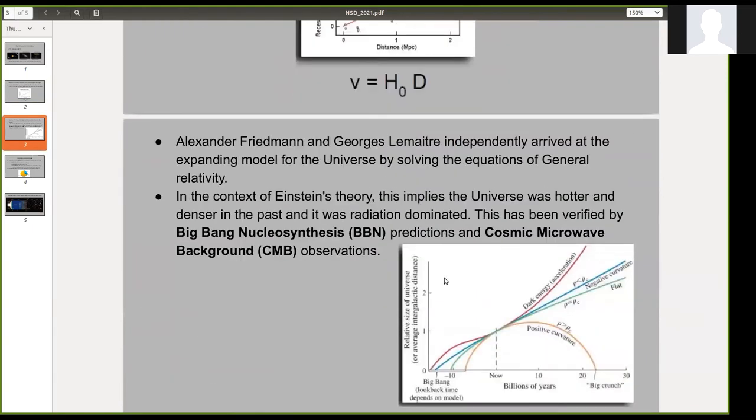The expanding model of the universe was derived by Friedman and Lemaitre independently by solving the equations of general relativity. The equations are quite complex and I will not be discussing them here, but the model implies that if the universe is expanding, then at some point in the past it must have been denser and hotter and it was radiation dominated.